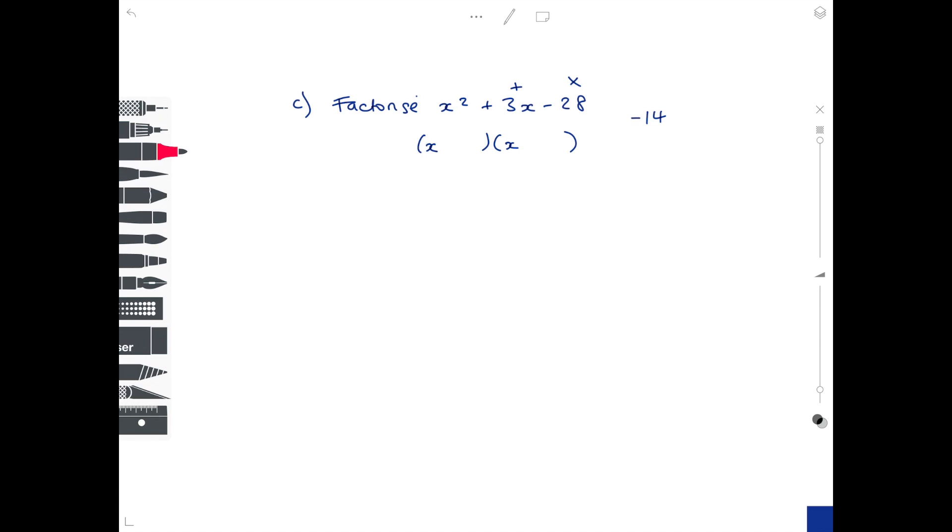Let's pick first of all -14 and positive 2. If you multiply together -14 and positive 2, then you get to -28, which is perfect. However, does -14 added to 2 get to 3? No, it's -12. So that's wrong. Even though it's fine for the multiplying to get to -28, it doesn't work for the adding to make 3.